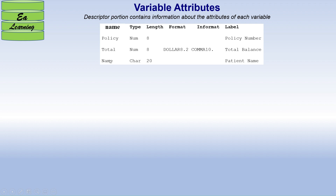The variable attributes in a data set include name, type, length, format, informat, and label. For example, there are three variables: 'policy' (numeric, length 8, label 'Policy Number'), 'total', and 'name'. I will now explain each attribute one by one.